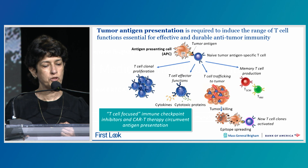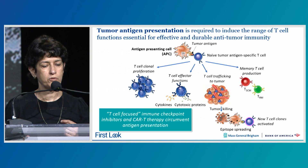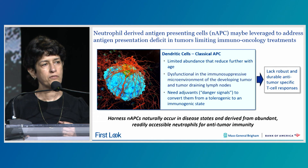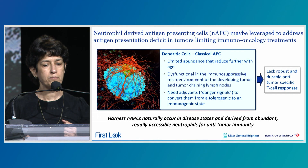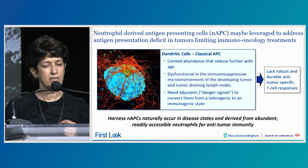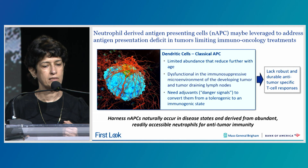These T-cell-focused immune checkpoint inhibitors and CAR-T therapy circumvent a known deficit in antigen presentation in tumors. That deficit is due to the fact that classical antigen-presenting cells—dendritic cells—are limited in abundance, reduce further with age, and become dysfunctional in the immunosuppressive microenvironment. They need adjuvants and danger signals to convert from a tolerogenic state to an immunogenic state, leading to a lack of robust and durable anti-tumor-specific T-cell responses.